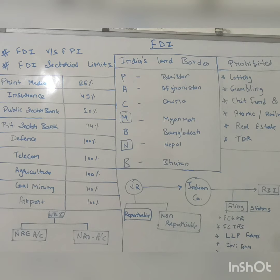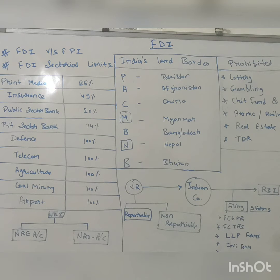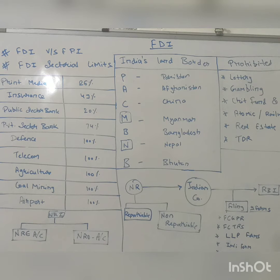FDI and FPI basically involve control, management, and volume. When you are investing in any entity out of India, it is termed as FDI or FPI — Foreign Direct Investment and Foreign Portfolio Investment. Foreign Direct Investment means a substantial interest — when an outsider is willing to invest in an Indian company with a willingness to acquire substantial interest, management, and control, then it is termed as FDI.